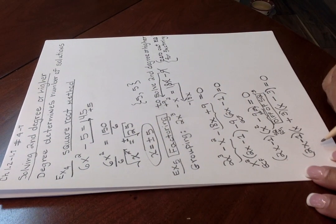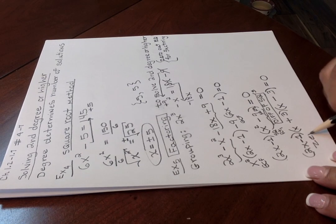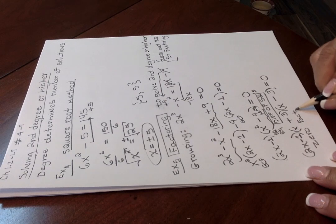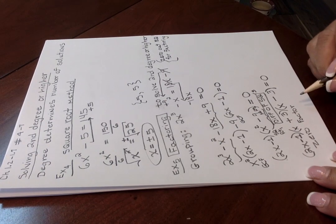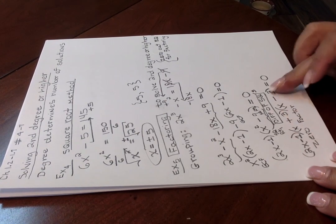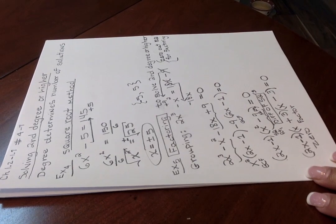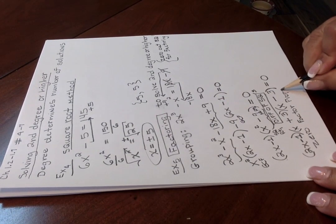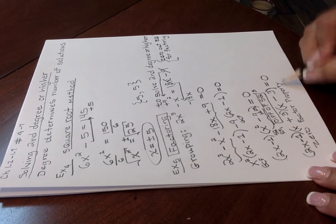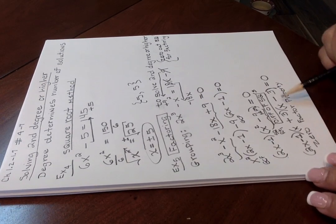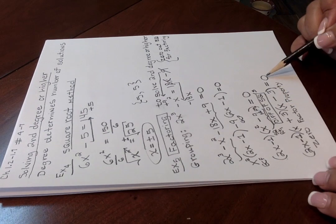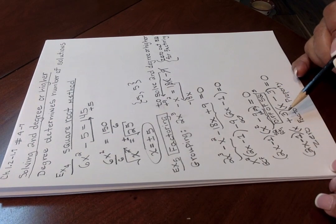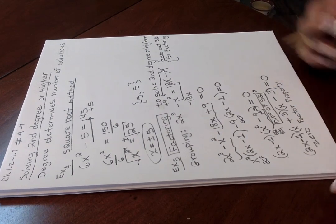So now what we're going to be using is the zero factor property. And what that property says is that these are all considered factors, these expressions that you see inside the parentheses. The zero factor property says that when two or more factors are multiplied together, resulting in an answer of zero, then either the first factor was zero or the second one or the third one or possibly all of them.